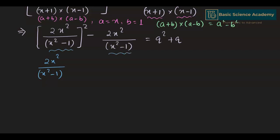Since the term 2x squared divided by (x squared minus 1) appears twice, let's substitute u equals 2x squared divided by (x squared minus 1). The equation then becomes u squared minus u equals q squared plus q.